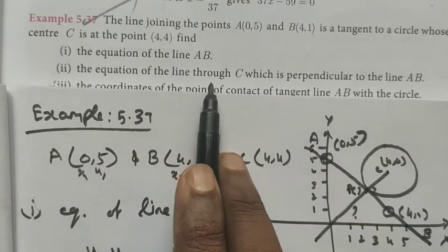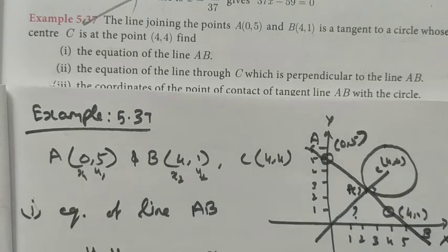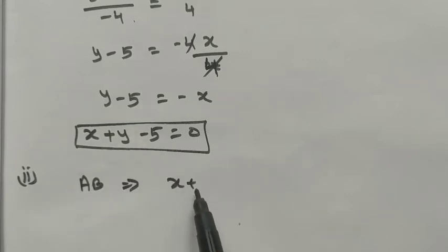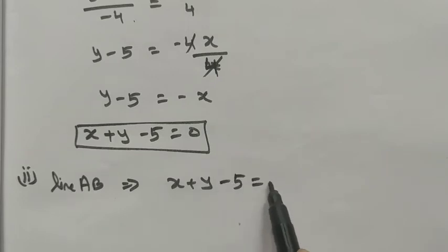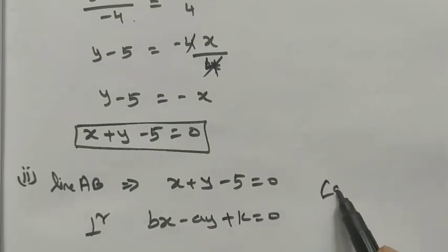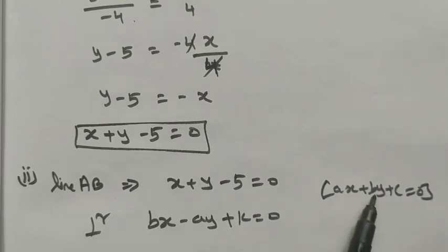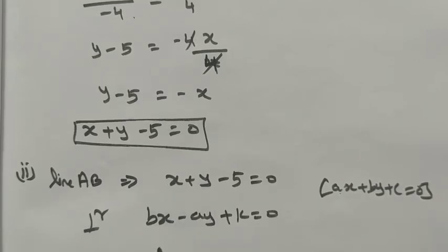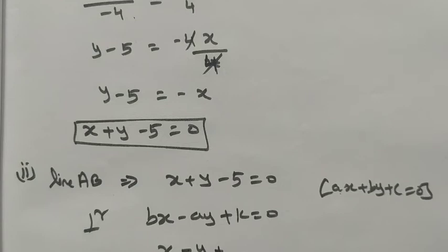Second, find the equation of the line through C perpendicular to line AB. Line AB is x + y - 5 = 0. We know the perpendicular condition: for a line ax + by + c = 0, the perpendicular form is bx - ay + k = 0 — interchange the coefficients of x and y and change the sign. Here the coefficients are both 1, so the perpendicular line becomes x - y + k = 0.